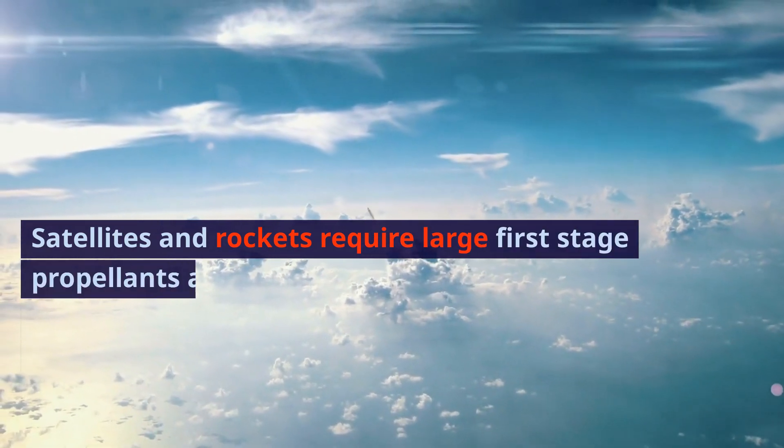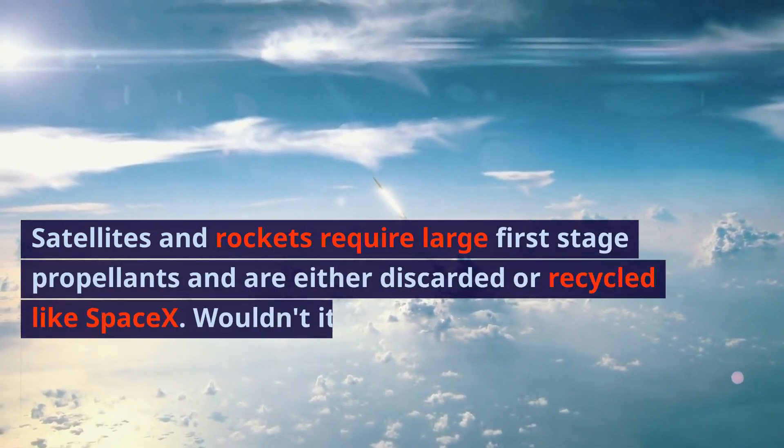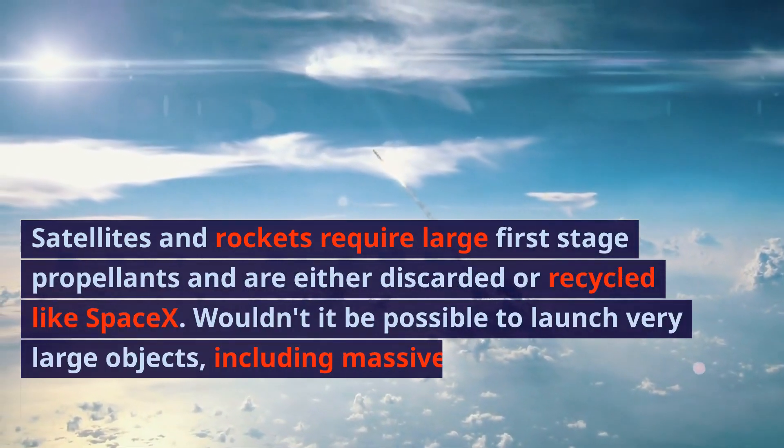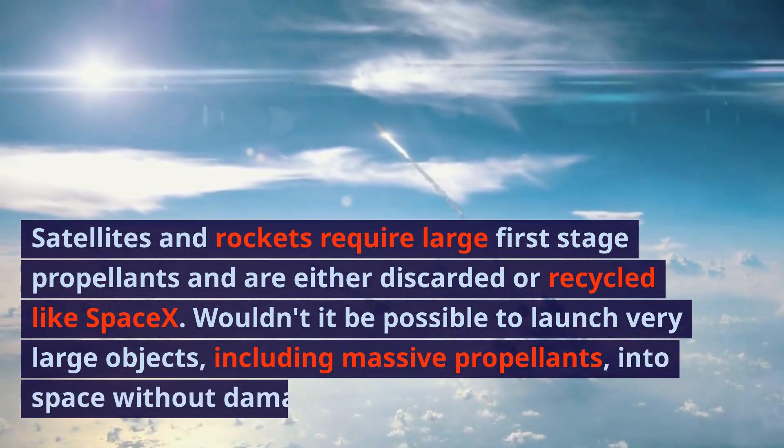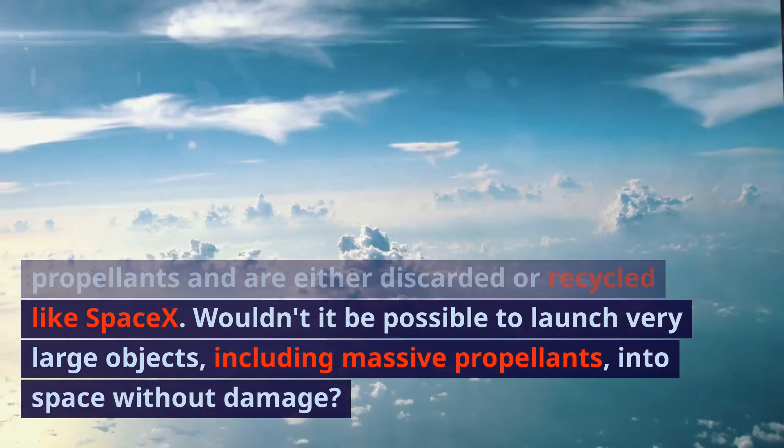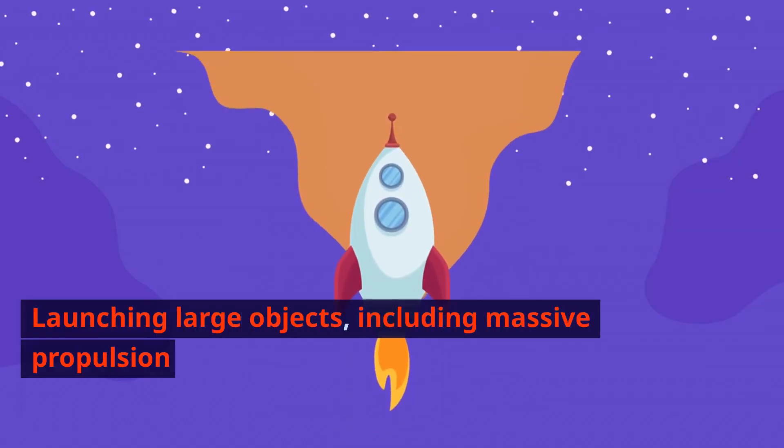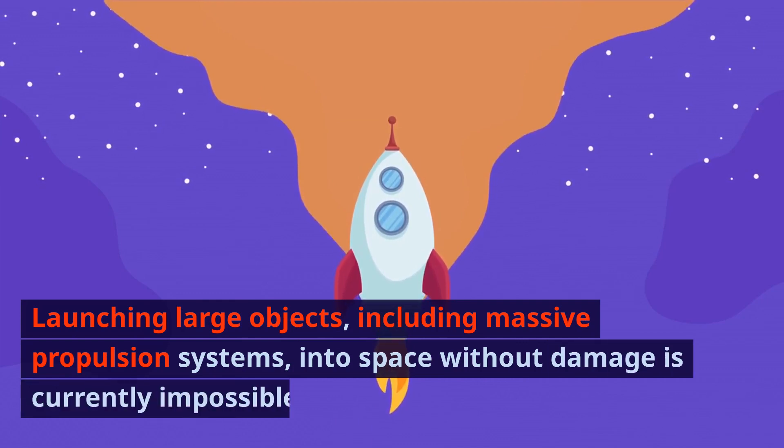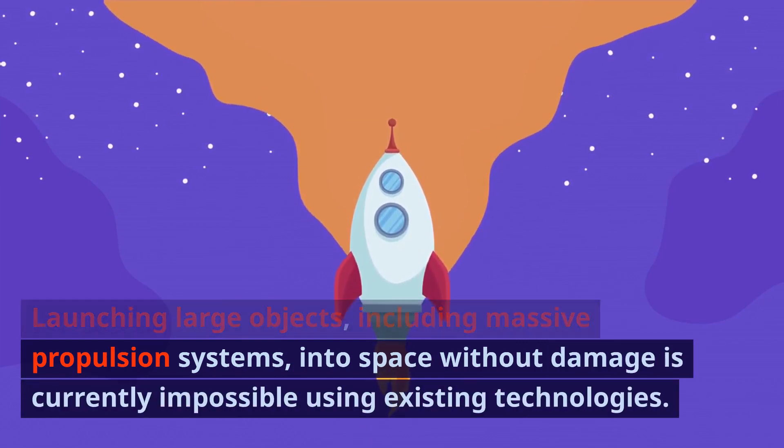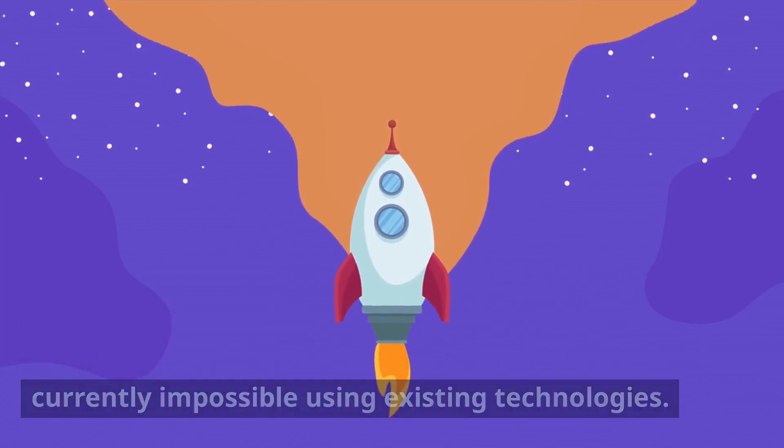Satellites and rockets require large first-stage propellants and are either discarded or recycled like SpaceX. Wouldn't it be possible to launch very large objects, including massive propellants, into space without damage? Launching large objects, including massive propulsion systems, into space without damage is currently impossible using existing technologies.